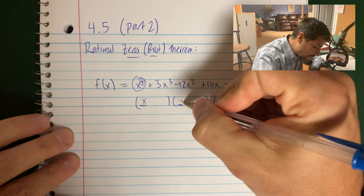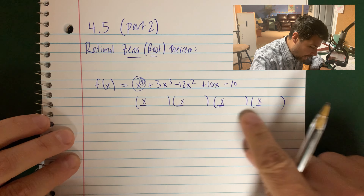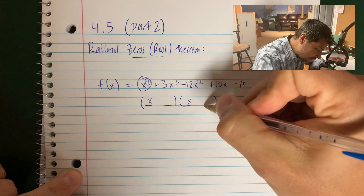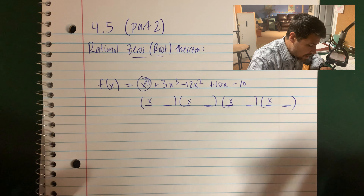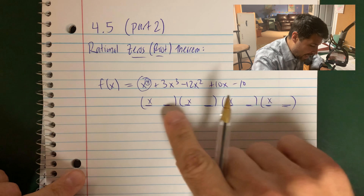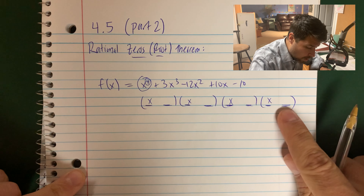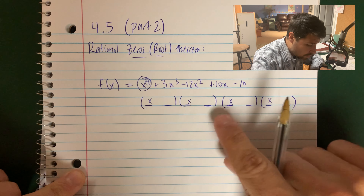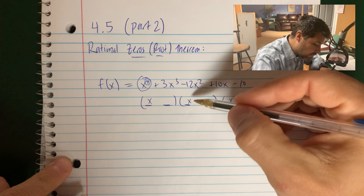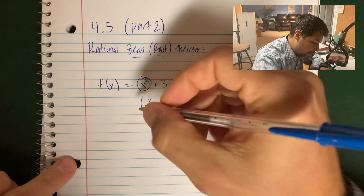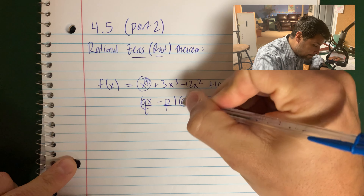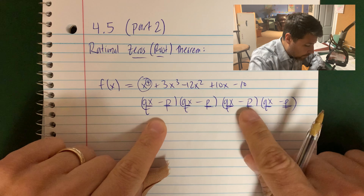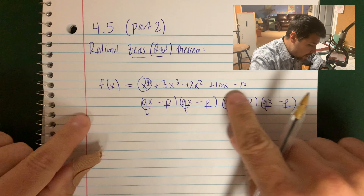In this case, it would be x times x times x times x, because x multiplied by itself 4 times gives you x to the 4th. The 10 at the end is really going to be the last times the last times the last times the last. There are a lot of possibilities for this 10 — I could have 5 times 2 times 1 times 1, or 1 times 1 times 10 times 1, or 2 times 1 times 5 times 1. What I do know is that all of these factors are always going to be in the general form qx minus p. I have 4 of these factors, and when I multiply all these out, I get that 4th degree polynomial.